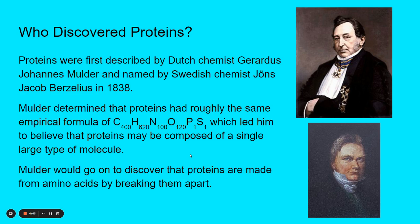So he kind of figured out that these things are made of building blocks — he just didn't realize that they were different kinds. Mulder would go on to discover that proteins are made from amino acids, although he didn't quite put that together. He broke them apart and got an amino acid as a product of that breakdown of a protein. So he was almost there, but not quite. We've figured it out since then.